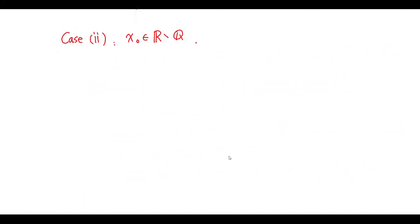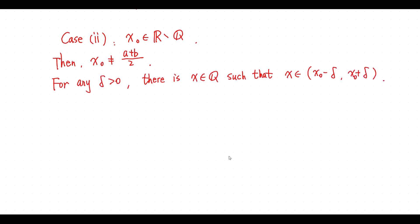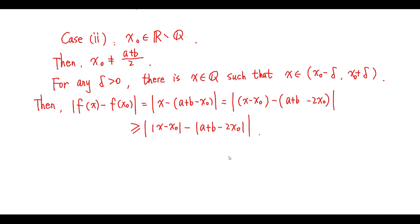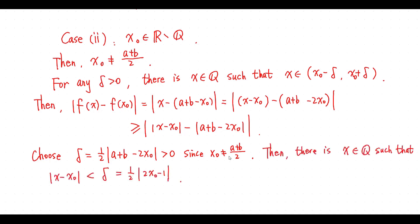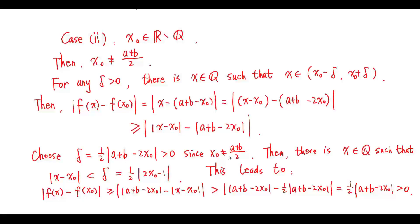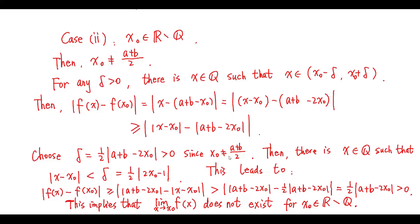Consider Case 2: x0 is not a rational number. Then x0 is not equal to (a+b)/2. For any positive real number delta, there is a rational number x such that x is in this open interval. We have this inequality. Choose this positive number delta. Then there is a rational number x such that this inequality holds. So the absolute value of f(x) minus f(x0) is greater than this positive real number. This implies this limit does not exist for this case.